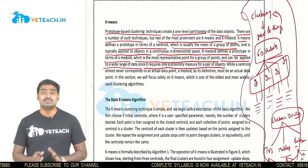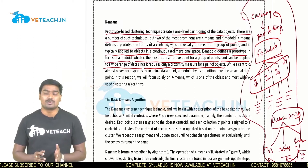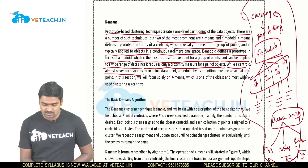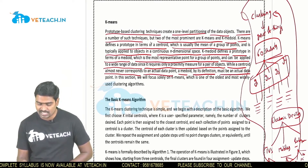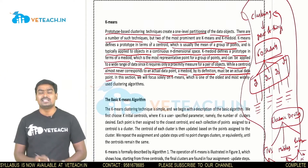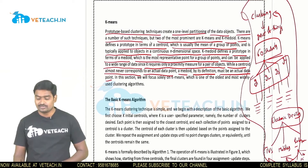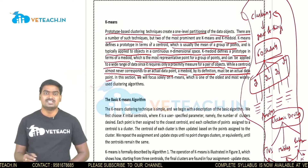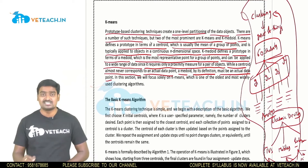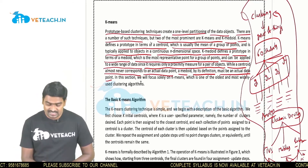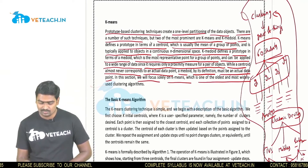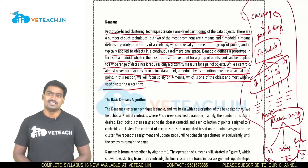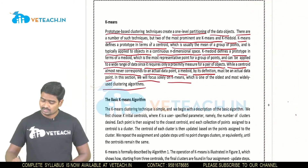K-Medoid can be applied to a wide range of data since it requires only a proximity measure for pairs of objects. Proximity measures whether objects are close or not. While a centroid almost never corresponds to an actual data point, a medoid by definition must be an actual data point. K-Means is one of the oldest and most widely used clustering algorithms.